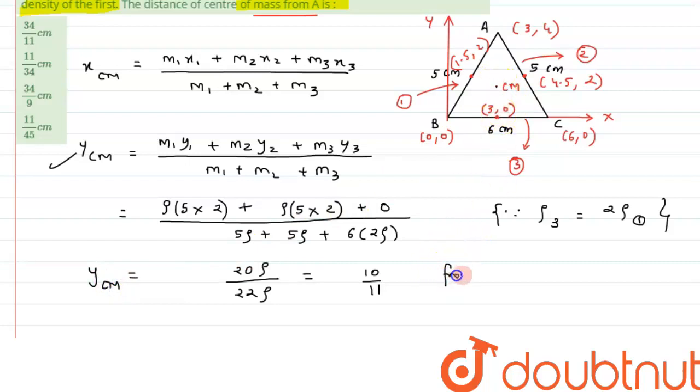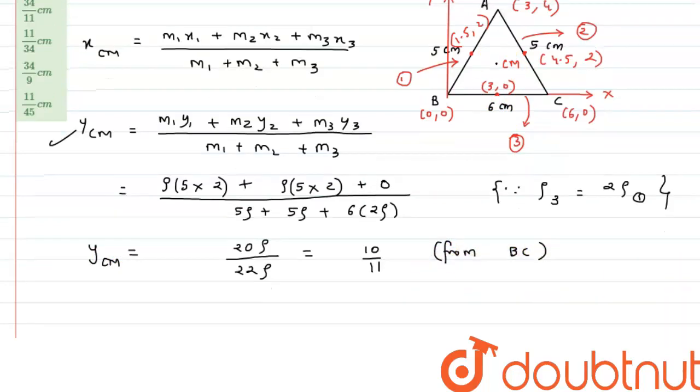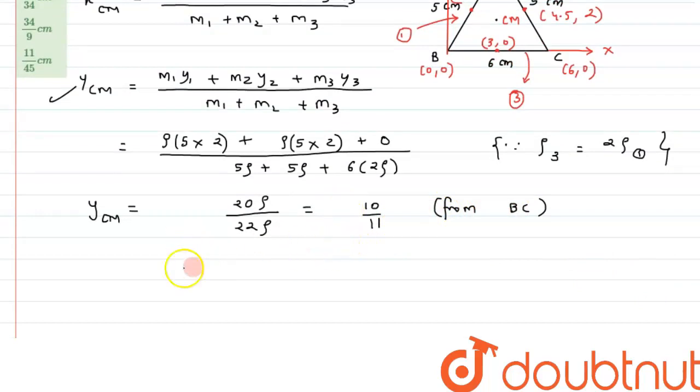That is we can write it as from BC. All right so from BC it is at 10 by 11 distance so we can say y_cm from A would be nothing but 4 minus and that equals 4 minus 10 by 11 because whole length is 4 and from here we have calculated it as 10 by 11 so substituting the value we will get the answer is 34 by 11 centimeter so this is the correct answer to this question.